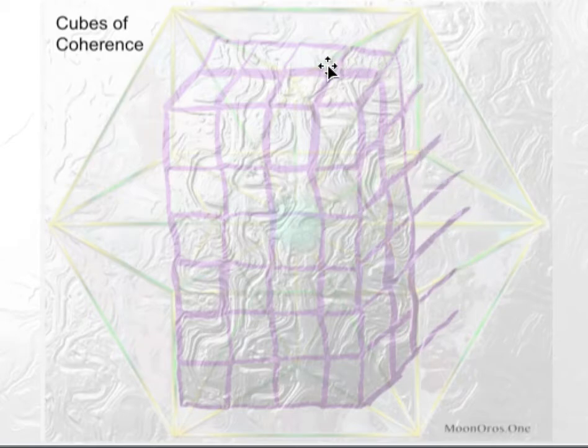It represents the zero point field, true sensitive neutrality from which creation comes from. These cubes of coherence enable us to remain coherent with our avatar light body and remain coherent as we are continuing to shift and evolve.